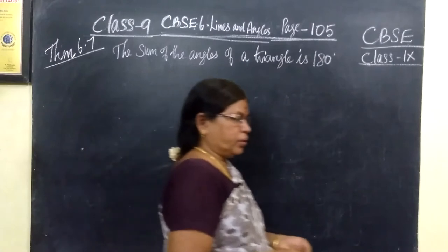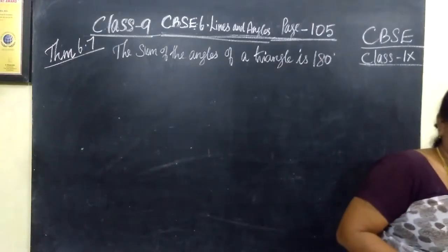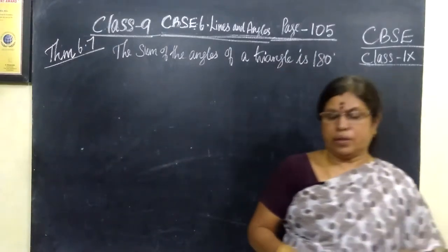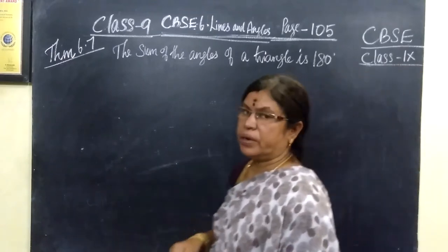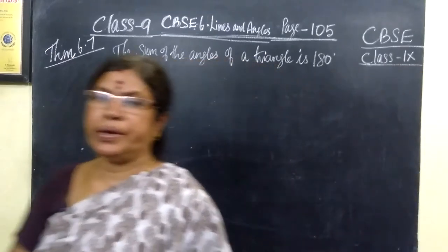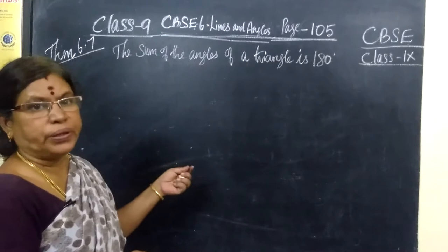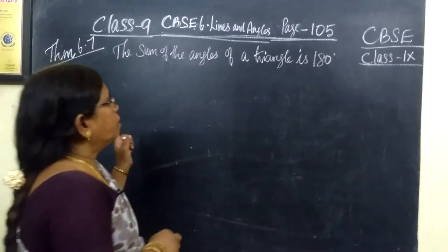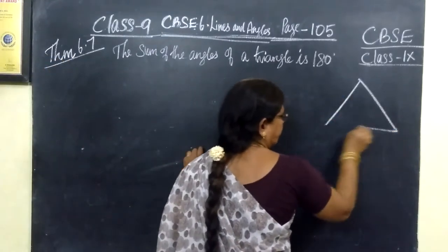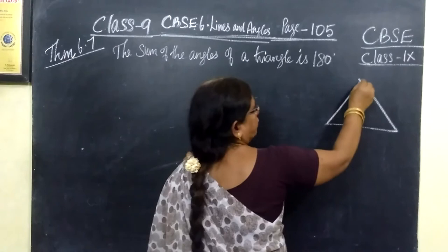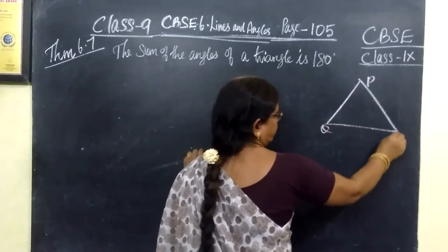Good evening. In this class, we see the theorem: the sum of the angles of a triangle is 180 degrees. This is a very simple theorem. We will draw a triangle PQR.